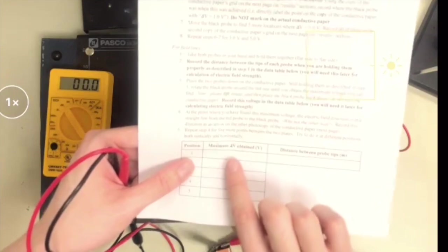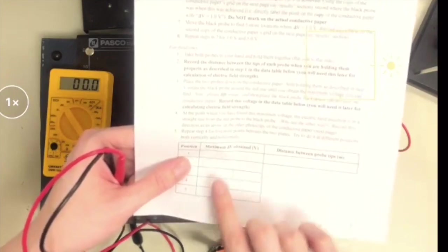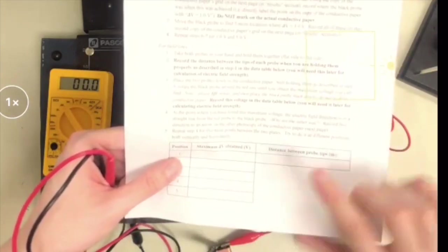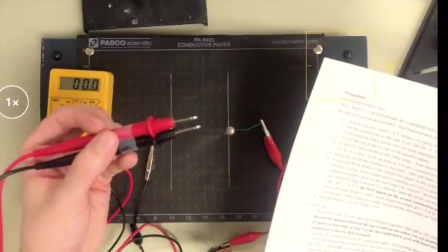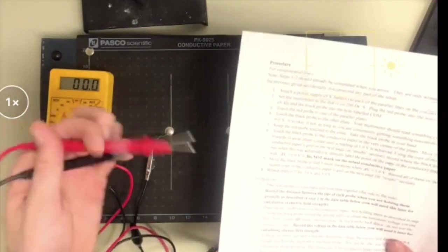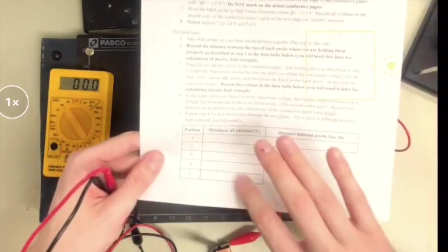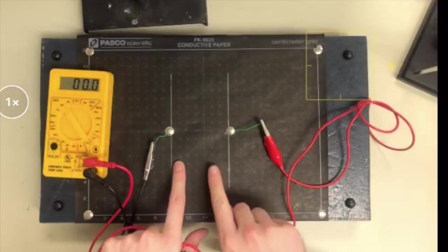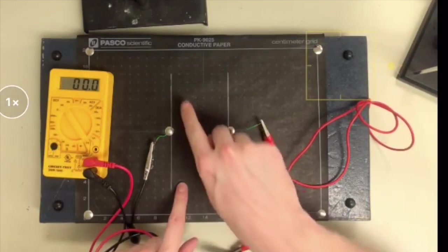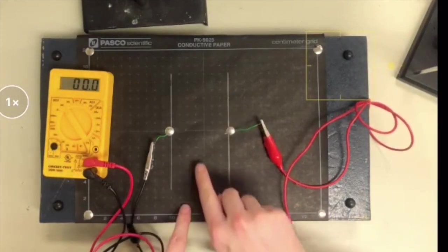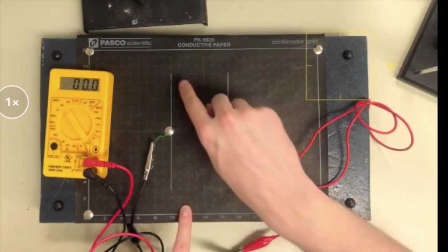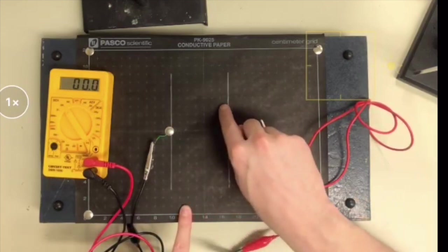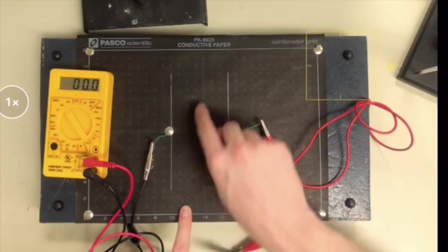The distance between the probe tips, that should be staying constant anyway, so you only needed to record it once from the ruler, but that maximum voltage obtained, you're going to need it for each of the five points you're going to do this at. So try to do it at five points that are different both vertically and horizontally. Don't just do them all on one line, and don't just do them all in one line that way. Try and go all over the place.